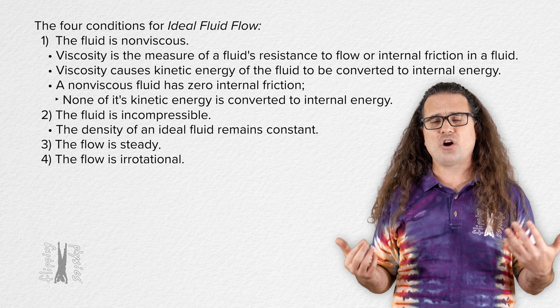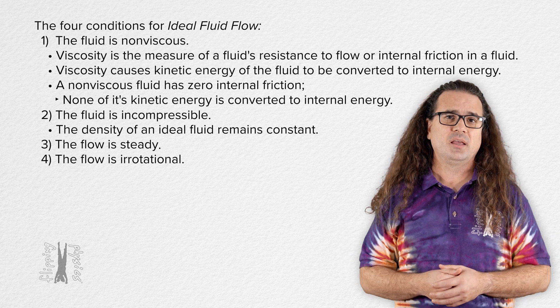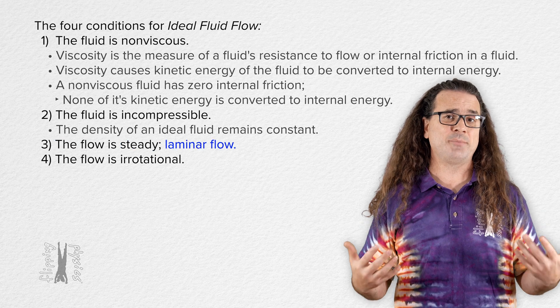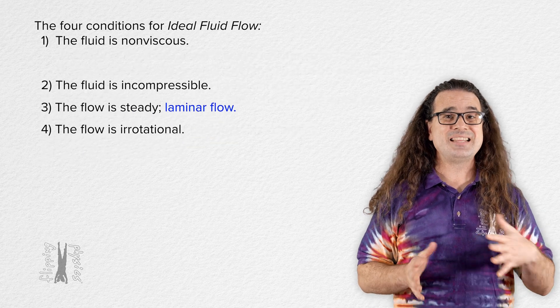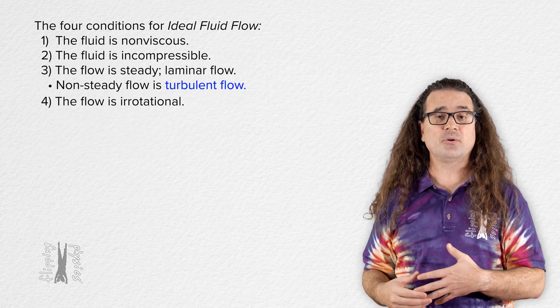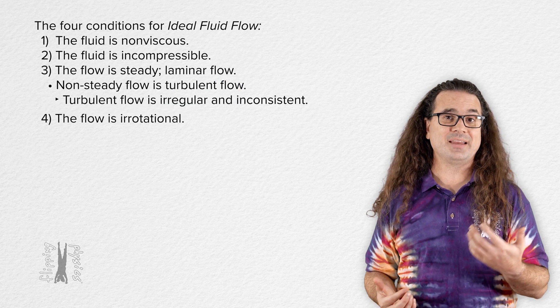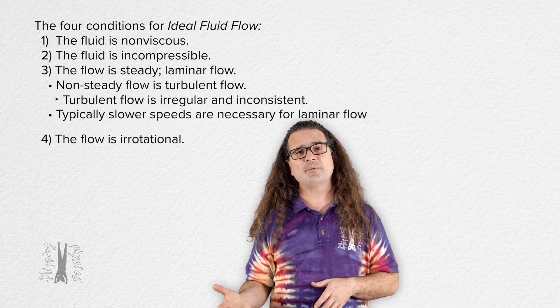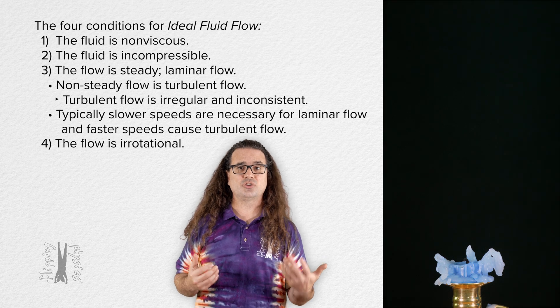And then we have the condition that ideal flow is steady, or what is called laminar flow. Flow that is non-steady is called turbulent flow. Turbulent flow is irregular and inconsistent. Typically, slower speeds are necessary for laminar flow, and faster speeds cause turbulent flow.